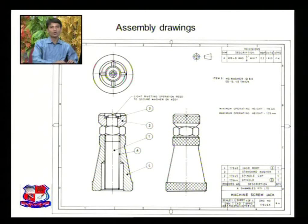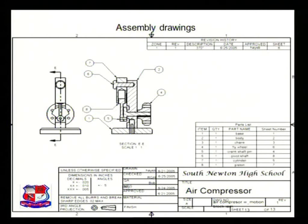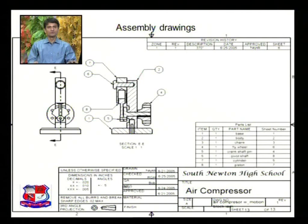The assembly drawing of machine screw jack should now be clear. The next assembly drawing is of an air compressor. Various components are represented — item number one, item number two, and so on — with eight components in total, each identified by individual names. A sectional view is shown to reveal the internal details of the assembly. A revision is also represented, and one additional element is the zone number, which is indicated here.